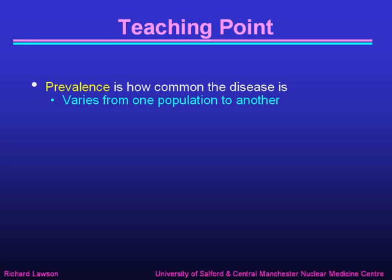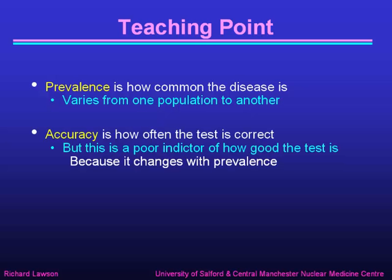So to summarize: prevalence shows how common the disease is and varies from one population to another. Accuracy is how often the test is correct, but it's a rather poor indicator of how good the test is, simply because it changes with prevalence. That concludes part two of my talk on diagnostic accuracy.